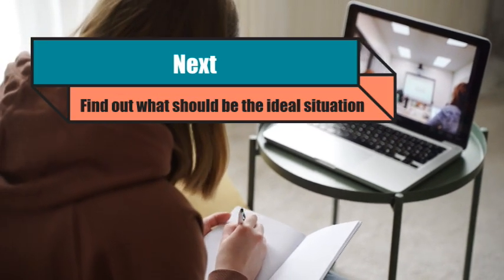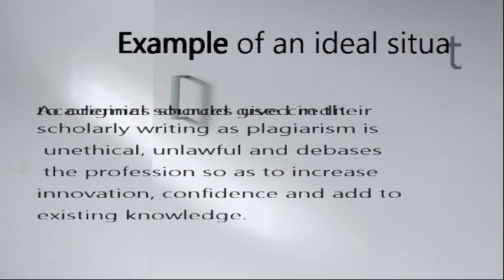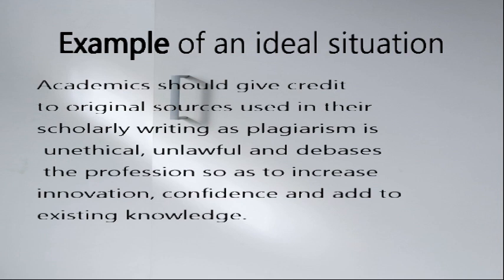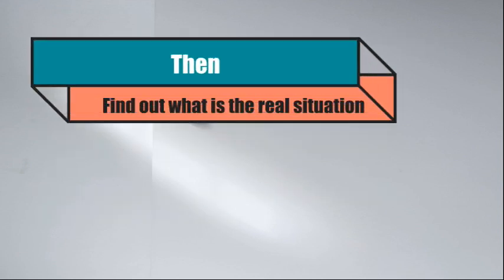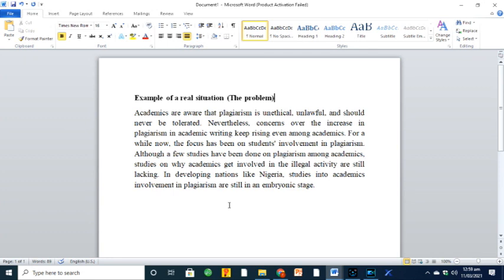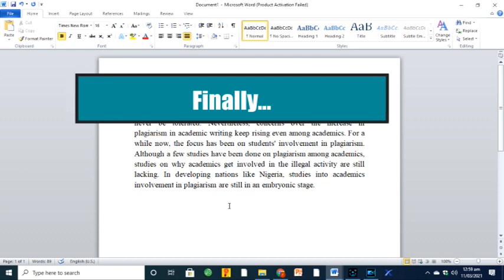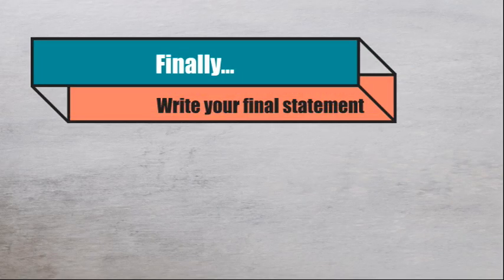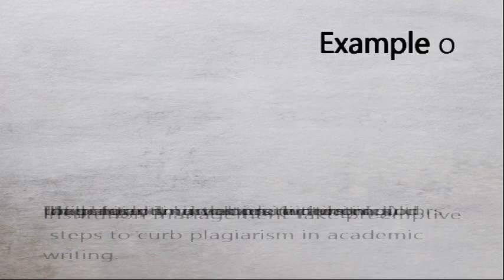Then I tried to find out what the ideal situation is. Using my current research on plagiarism among academics, I wrote the problem or gap I identified clearly by first stating what the ideal situation should look like. Then I tried to find out what the real situation was. After that, I wrote my study purpose, statement of the objective, and scope of the project being proposed in a final statement.